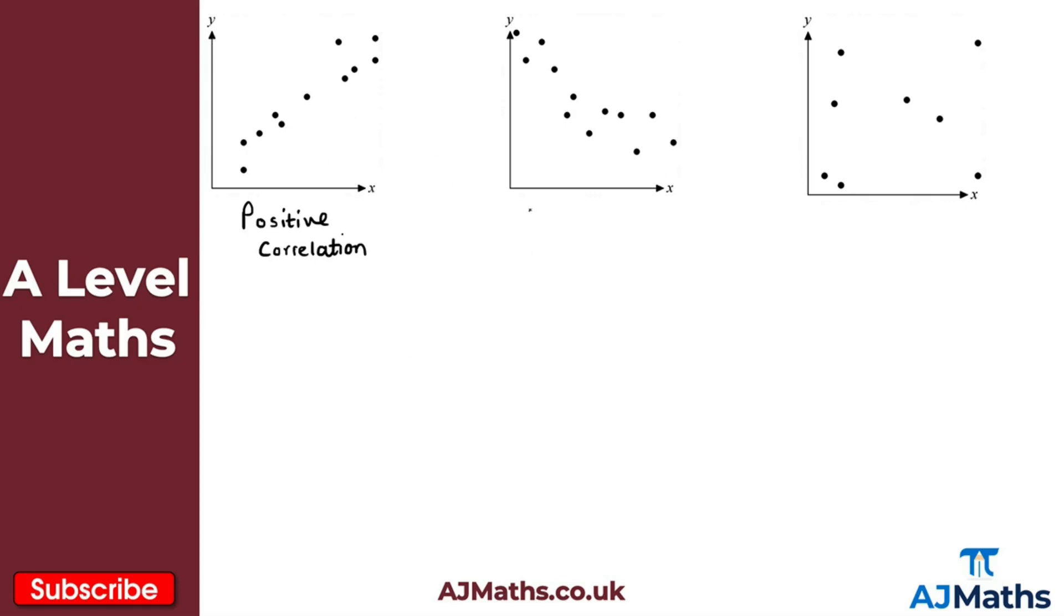The next one here is negative correlation. What I can see here with negative correlation is that as one of the variables increases, the other variable decreases.